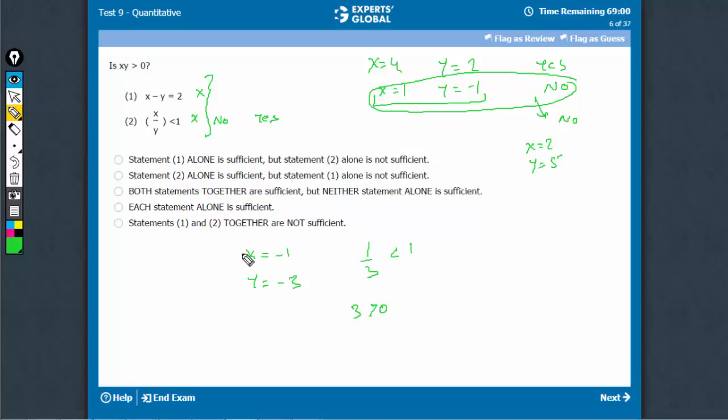So, for a combination of such values, we get yes as an answer. So, even after combining, yes as well as no, both are possible. Therefore, the question cannot be answered. E is right.